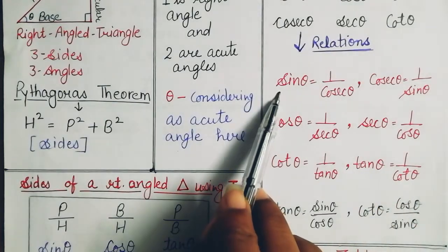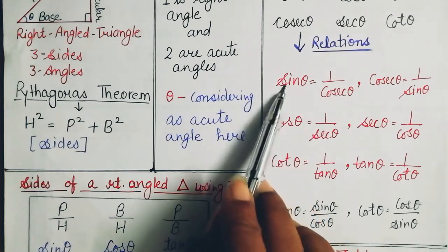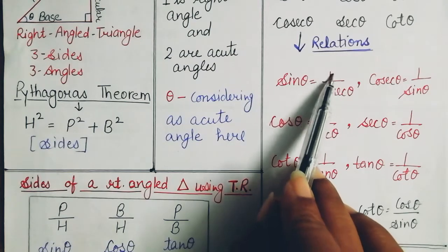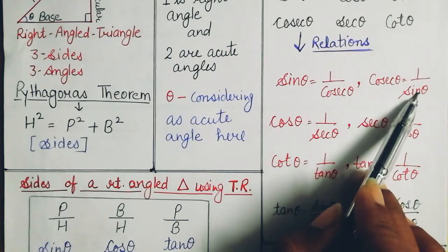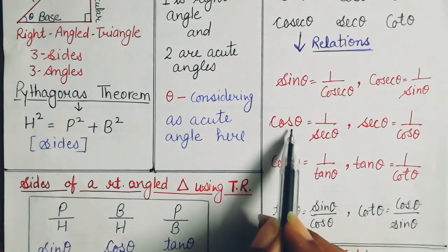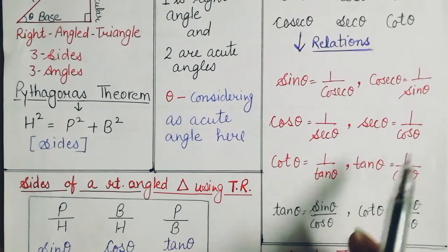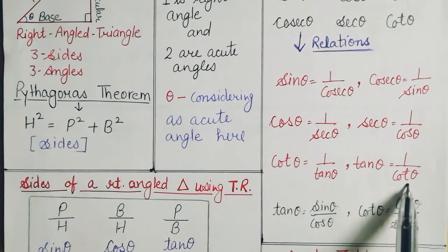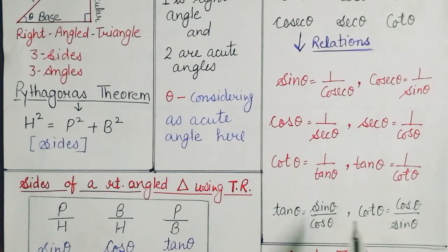Now the relations between these ratios: sine theta and cosecant theta are reciprocals of each other. So if cosecant theta is given and you need sine theta, just take the reciprocal, and vice versa. Similarly, cos theta and secant theta are reciprocals, and cot theta is one upon tangent theta — these three pairs are each other's reciprocals.